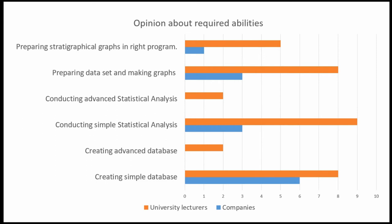I then addressed the question about what abilities graduates of university should have, asking both companies and university teachers the same question. The abilities covered were: preparing statistical graphs, preparing datasets, conducting advanced statistical analysis, conducting simple statistical analysis, creating advanced databases, and creating simple databases — essentially a set of questions about general data analysis.